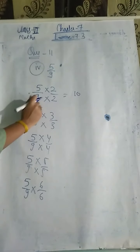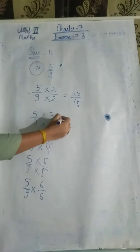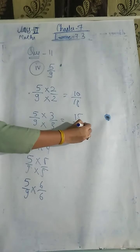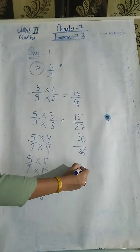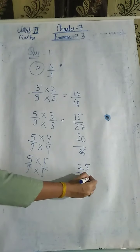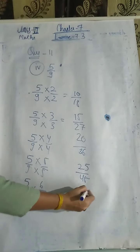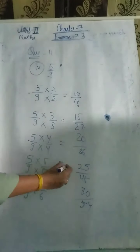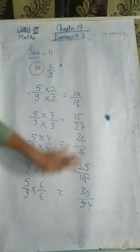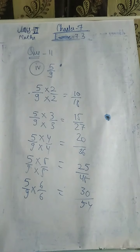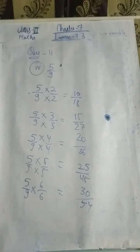Continuing with 5 upon 9: multiplied by 5 gives 25 upon 45; multiplied by 6 gives 30 upon 54. All these are equivalent fractions of 5 upon 9. These are your answers. You have to start from 2 and go up to 6 for all questions in this set. Now you can do questions 1st, 2nd, and 3rd on your own. Then I will start Exercise 7.4.